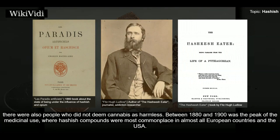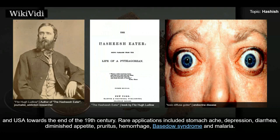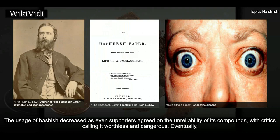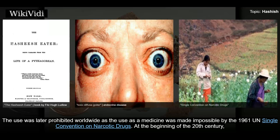Between 1880 and 1900 was the peak of medicinal use of hashish, where hashish compounds were most commonplace in almost all European countries; evidence of misuse at that time was practically non-existent. Hashish played a significant role in the treatment of pain, migraine, dysmenorrhea, pertussis, asthma, and insomnia. Rare applications included stomachache, depression, diarrhea, diminished appetite, pruritus, hemorrhage, and malaria. Usage decreased as supporters agreed on the unreliability of its compounds, and hashish as a medicine disappeared completely in the 20th century.